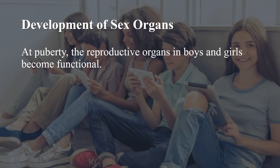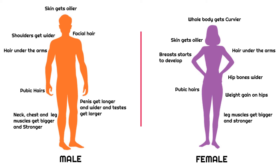In the next slide, you will see the changes brought about in boys and girls respectively. In males: skin gets oilier, shoulders get wider, facial hair and underarm hair start to grow, pubic hair starts to grow, the penis gets longer and wider, testes get larger, and neck, chest, and leg muscles get bigger and stronger. In females: the whole body gets curvier, skin gets oilier, underarm hair starts to grow, breasts start to develop, hip bones get wider, pubic hair starts to develop, and weight is gained on hips while leg muscles get bigger and stronger.